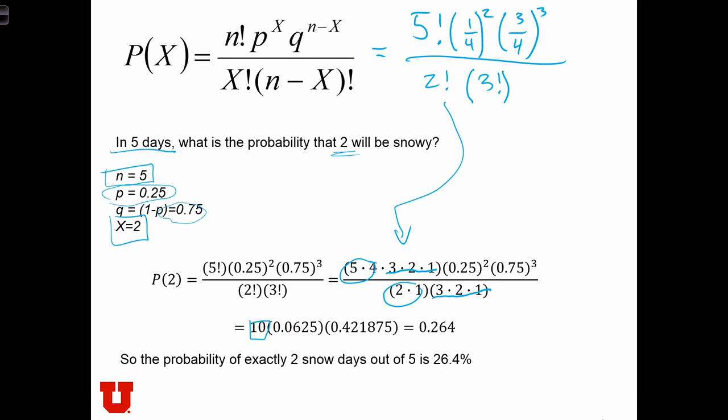So we have 10 times 0.25 squared, that's this value over here, and then we have 0.75 cubed, that's this value over here.